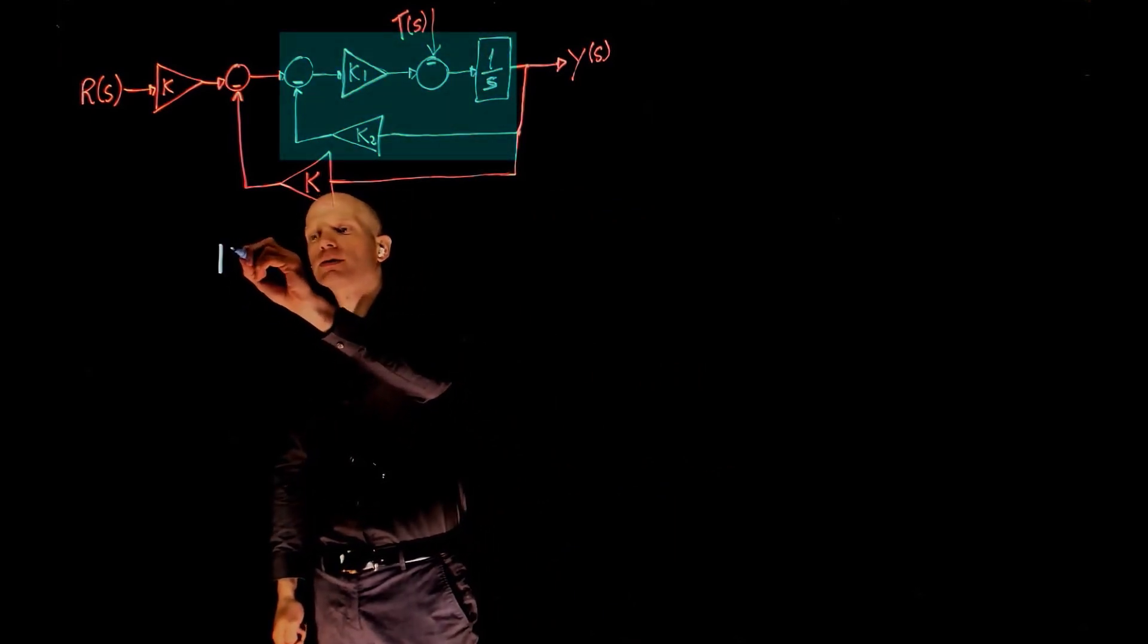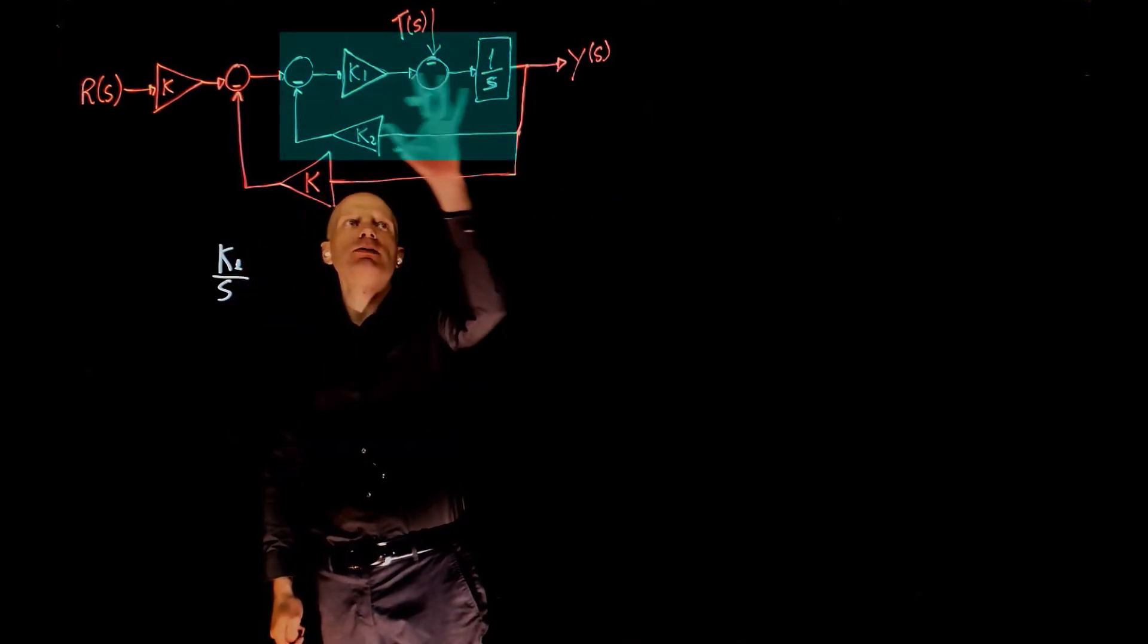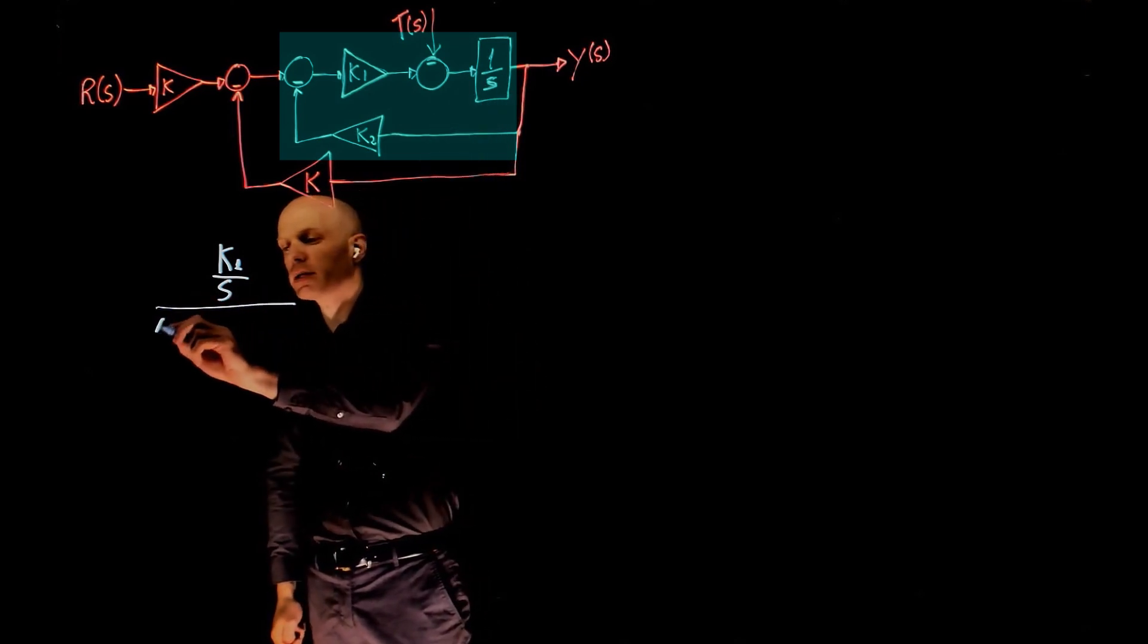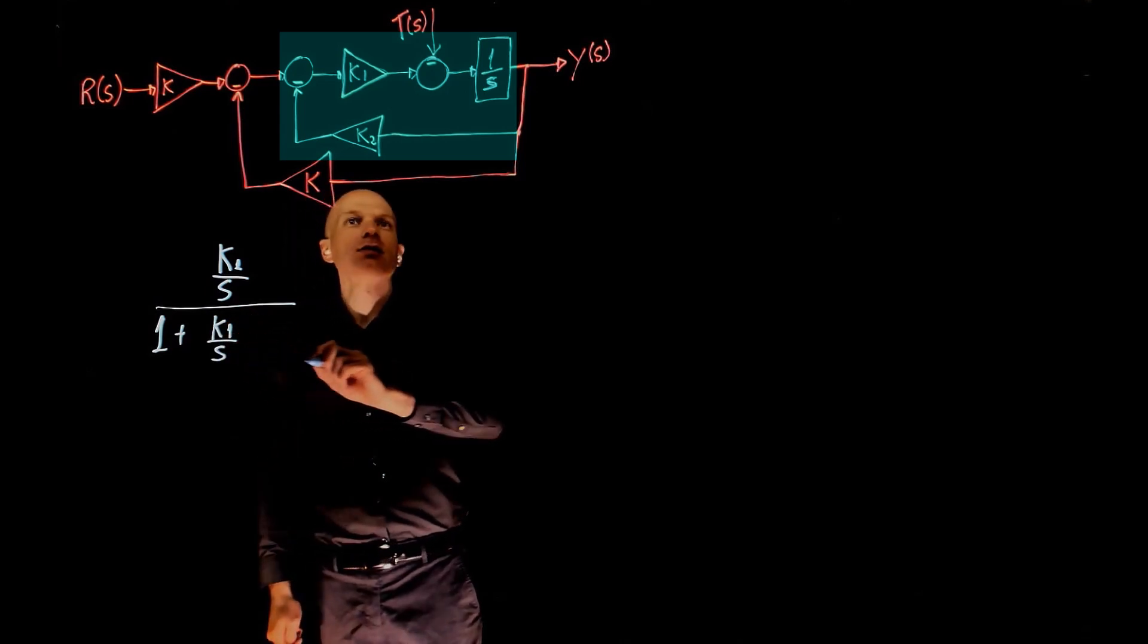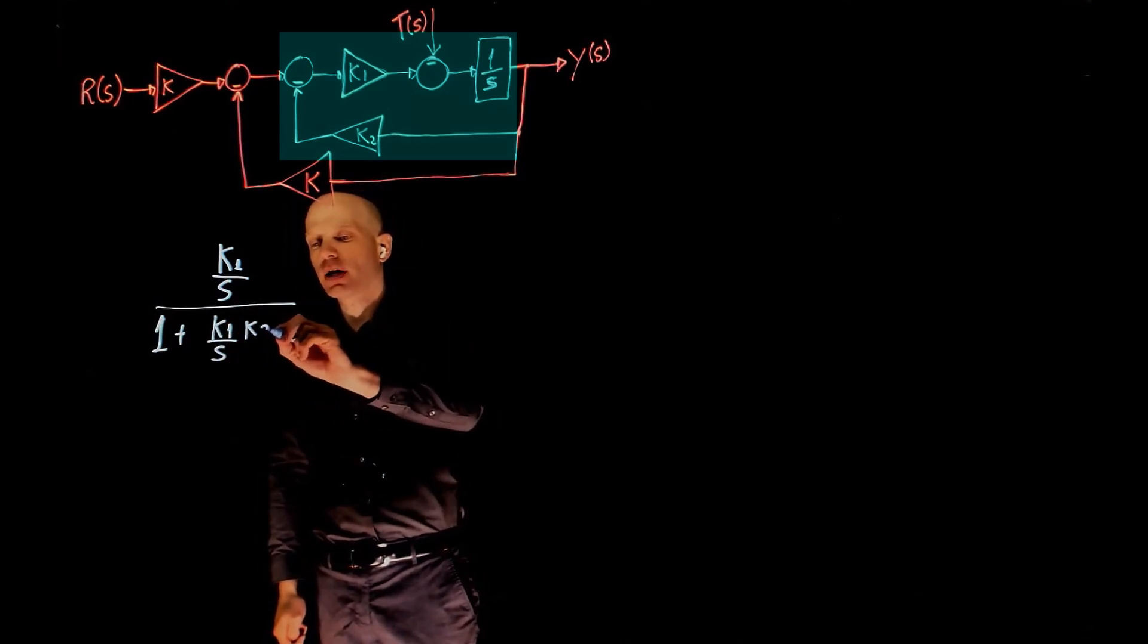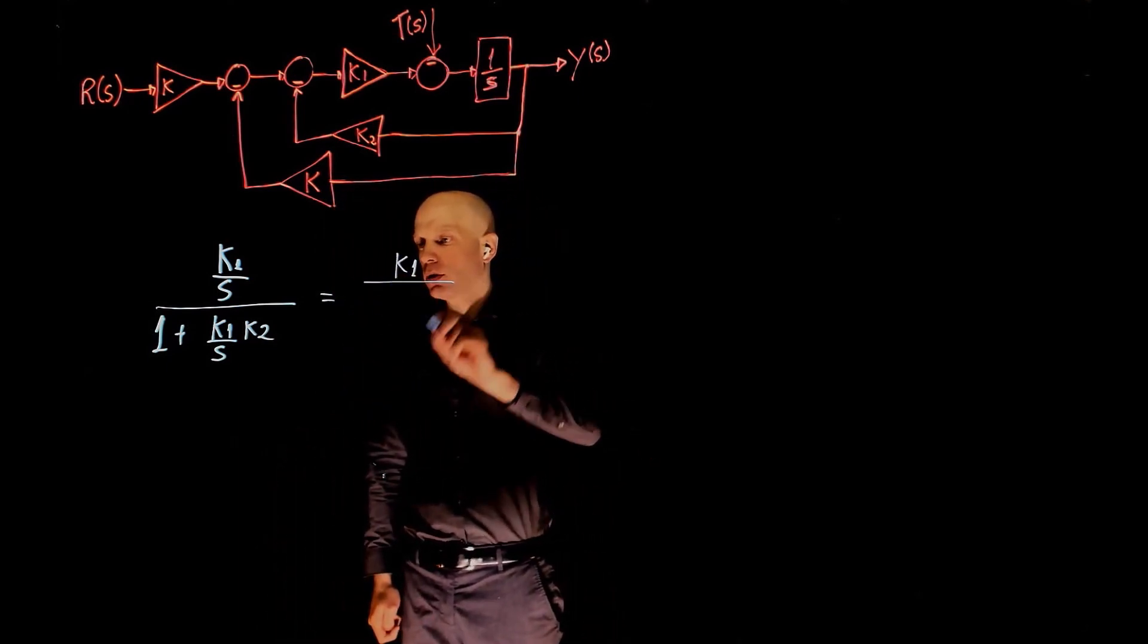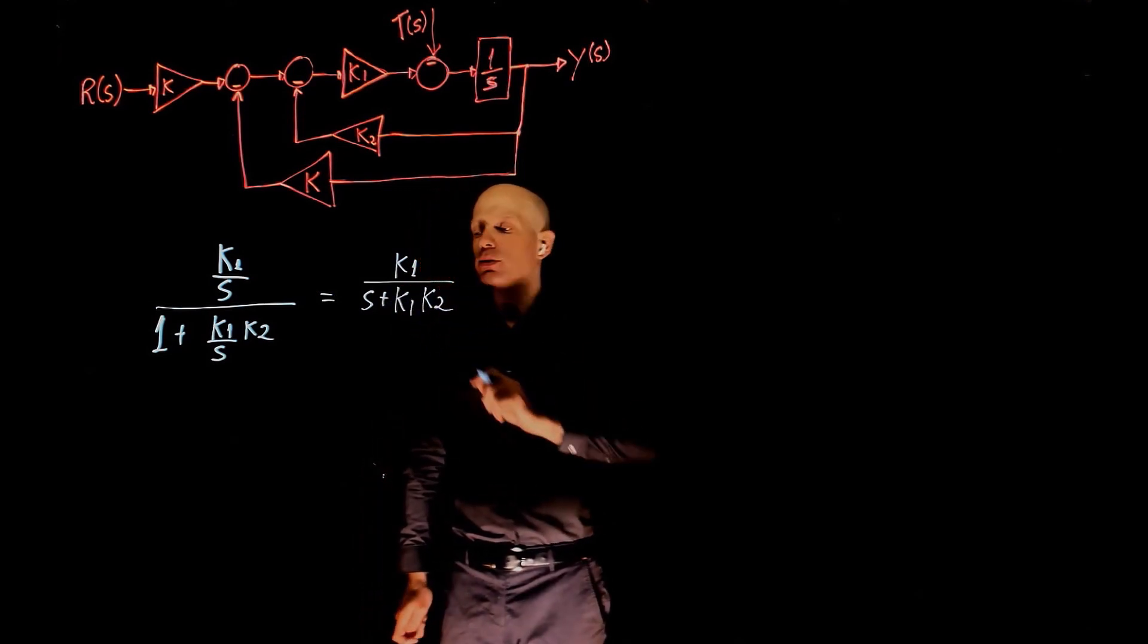The transfer function there becomes k1 over s, simply the multiplication of these two elements, divided by 1 plus the loop function k1 over s times the feedback function k2, and this simplifies to k1 over s plus k1 k2.